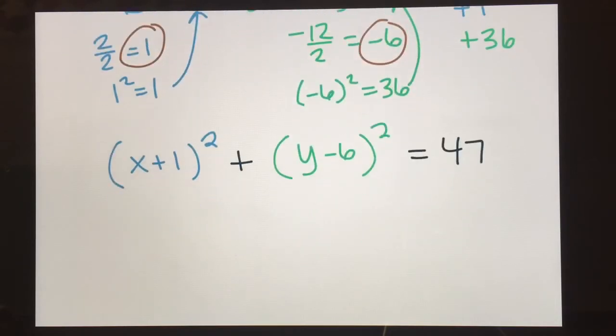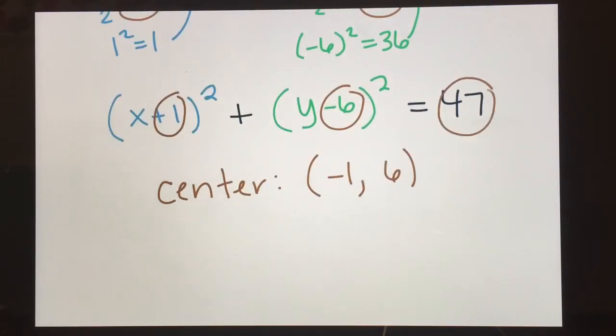So now if I want to know what the center is, it's this number and this number. So my center. And it's the opposite sign. So negative 1, positive 6. And then my radius. I know that this value here is r squared. And so my radius is going to be the square root of that. And you would simplify square root of 47 if you could.